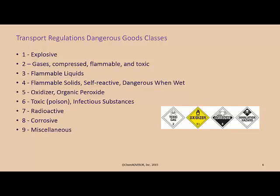The various transport regulation sources provide criteria to determine what dangerous goods or hazard class substances may fall into. There can be more than one hazard class that a substance falls into. The dangerous goods classes are explosives; gases — compressed, flammable, and toxic; flammable liquids; flammable solids; self-reactives; dangerous when wet; oxidizers; organic peroxides; toxics; infectious substances; radioactive; corrosive; and Class 9 — miscellaneous, which are the hazards that don't fit into any other hazard classes.